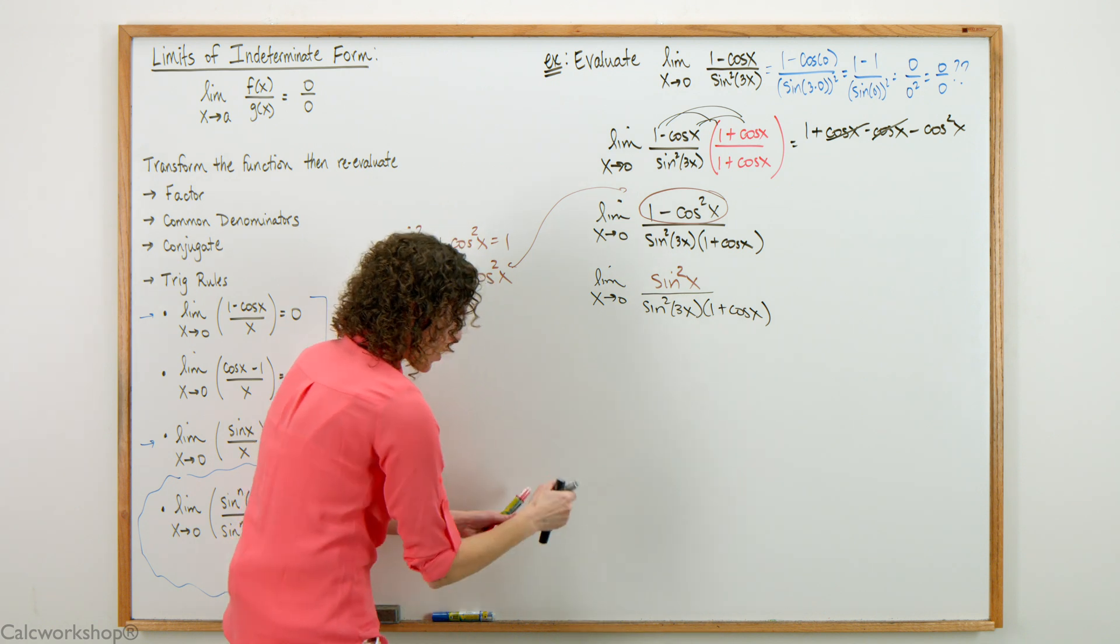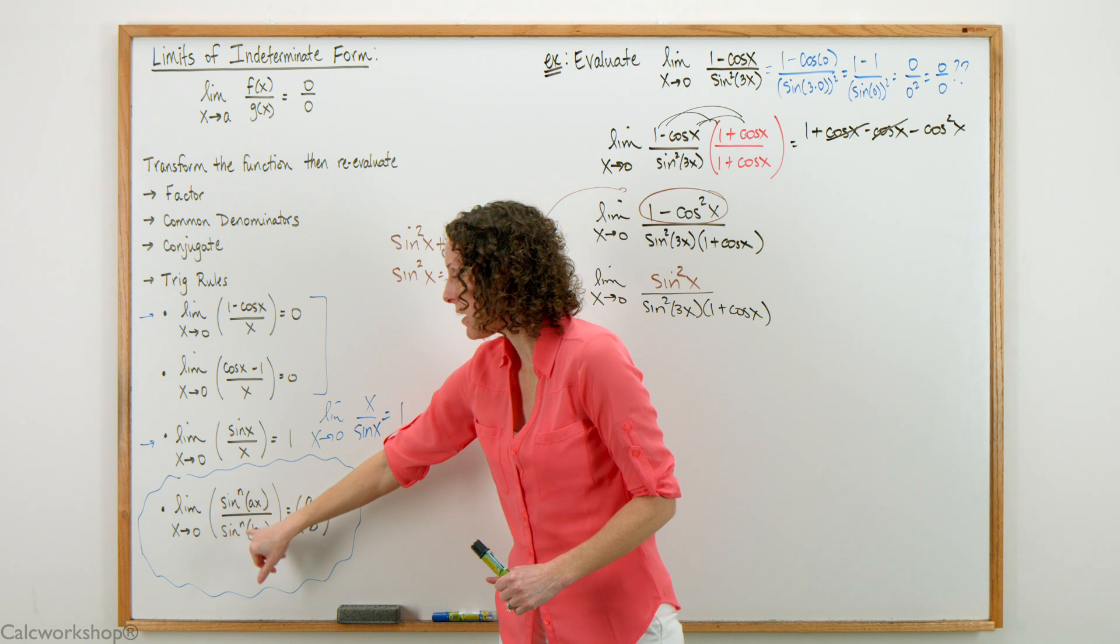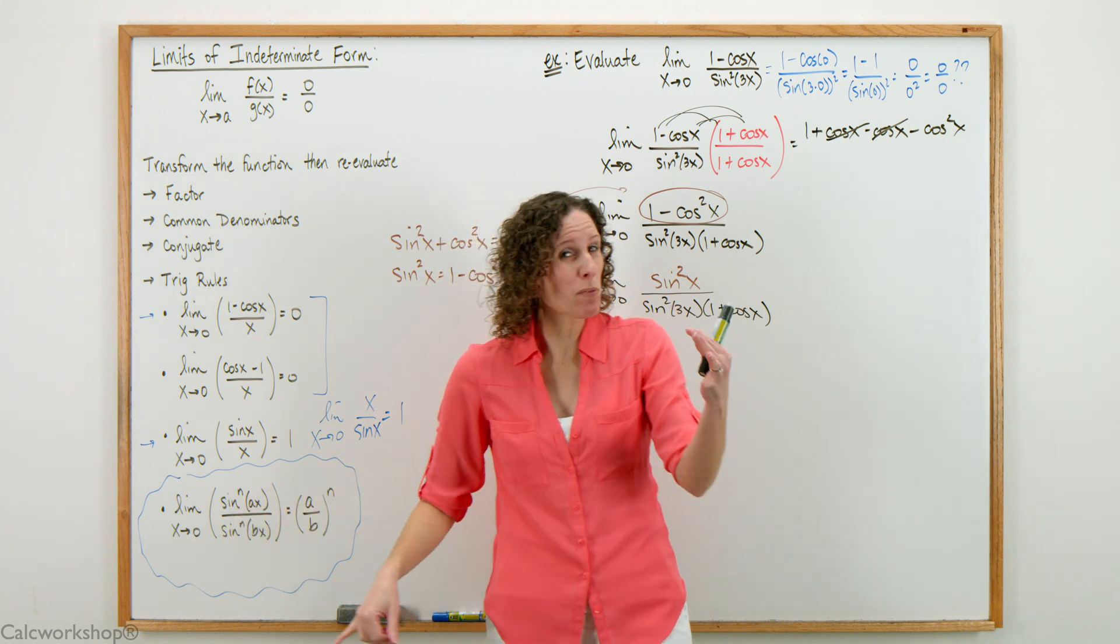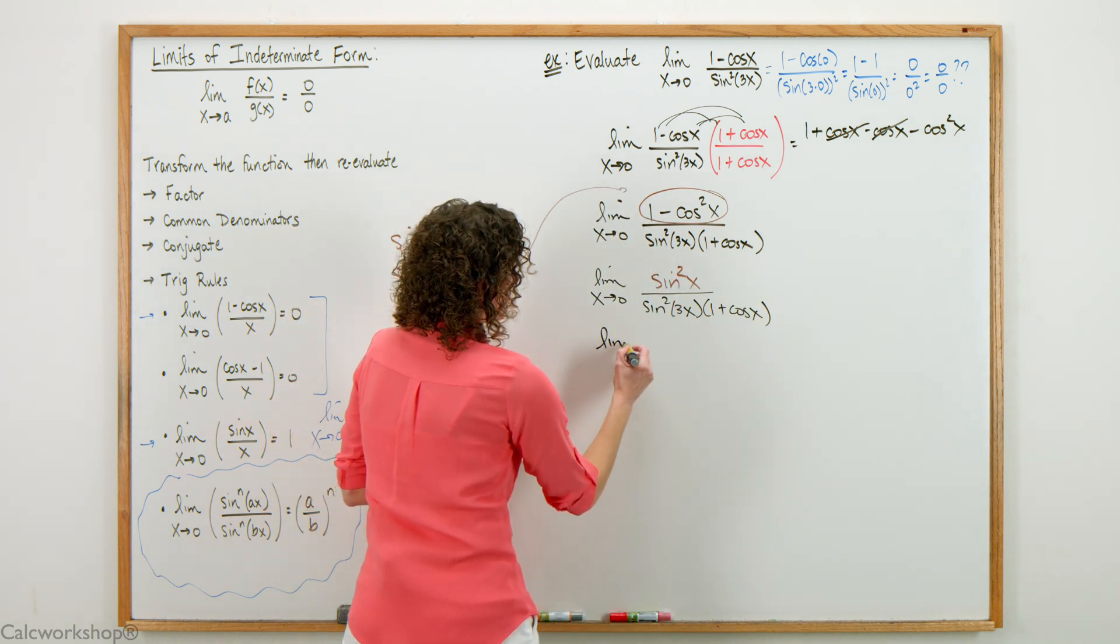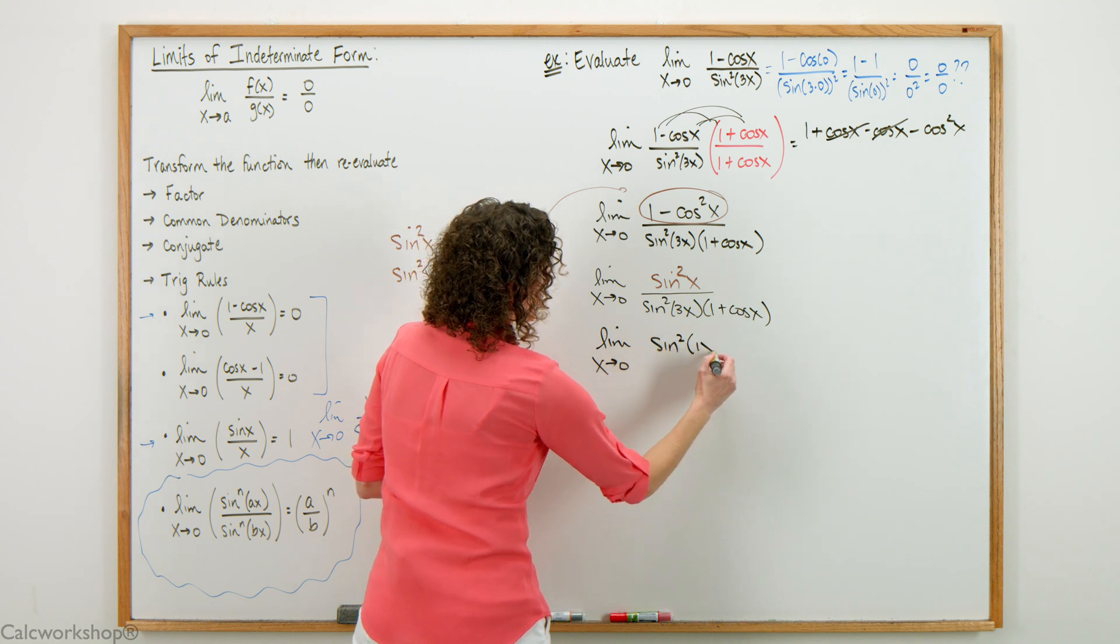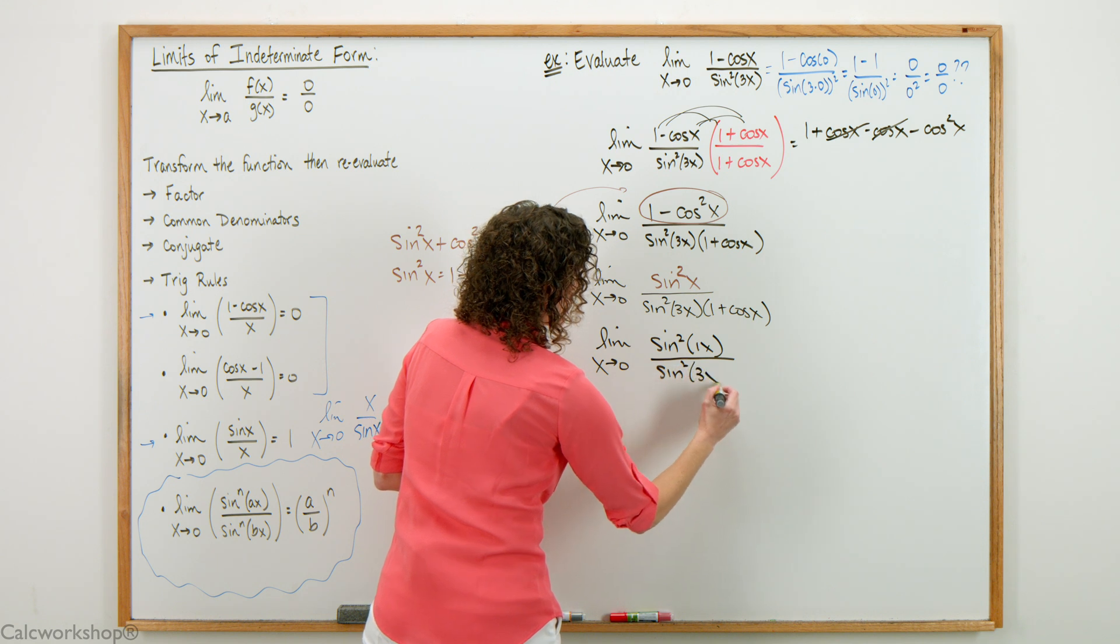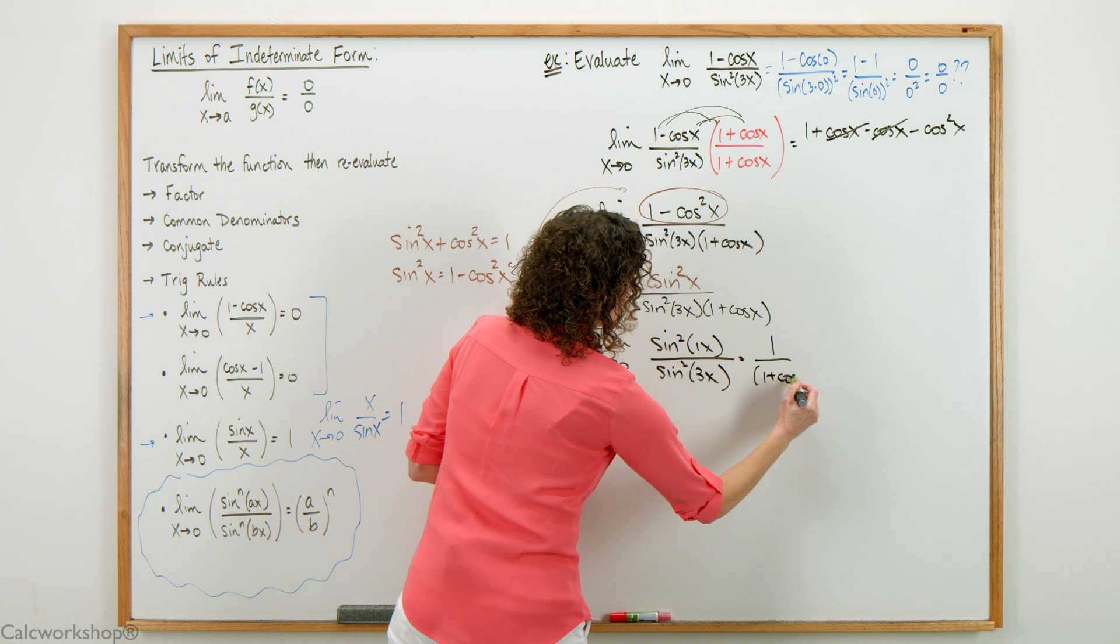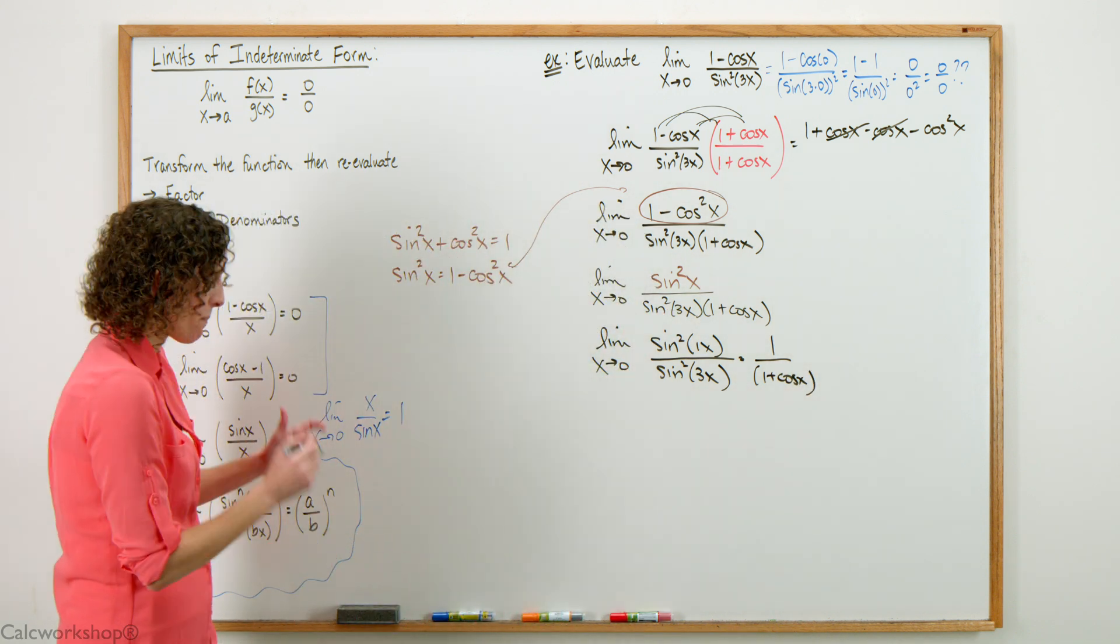That gives me the limit as x approaches 0 of sine squared x divided by sine squared of 3x times 1 plus cosine x. Now we are super close to what we need. We have a sine over a sine with the same power, so we can pull out those leading coefficients. I'm going to rewrite this to make it more clear.